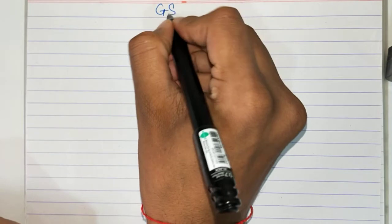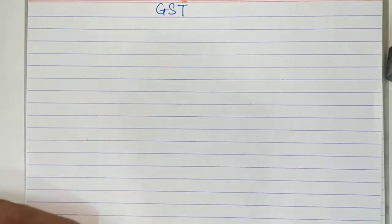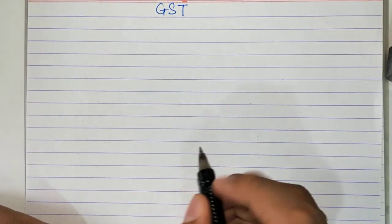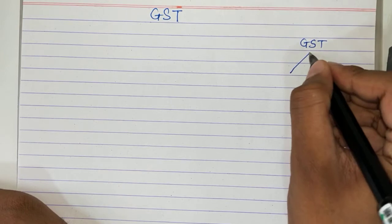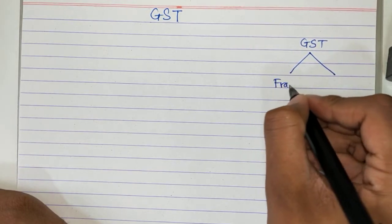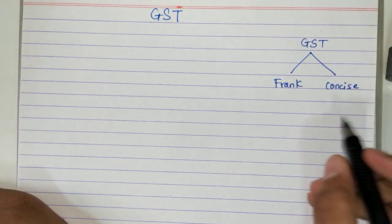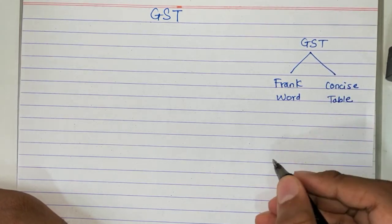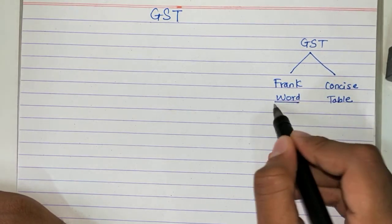Hello students, today we will start with a new chapter: Goods and Services Tax (GST). This is a new tax regime which replaced the old one, which was Value Added Tax. In this chapter, there are two books - Frank and Concise - both are different. Frank has more word problems and Concise has tabular questions, so both are important.